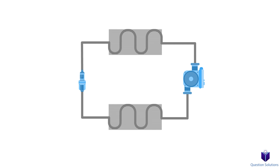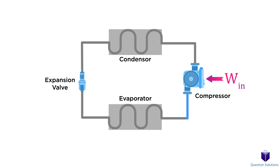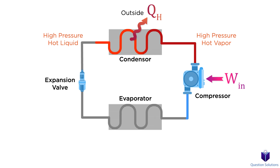This is a basic vapor compression refrigeration cycle. The working fluid inside the refrigeration cycle is called a refrigerant. The refrigerant enters the compressor as a vapor and is compressed. There is work input since energy is required for the compressor to function. After the refrigerant is compressed, it has a relatively high temperature and high pressure. It then enters the condenser and condenses to a liquid as it flows through the coils of the condenser and cools down. Here, there is heat output since heat is rejected into the surroundings.